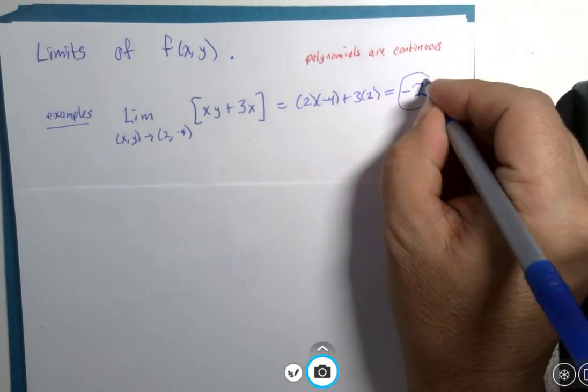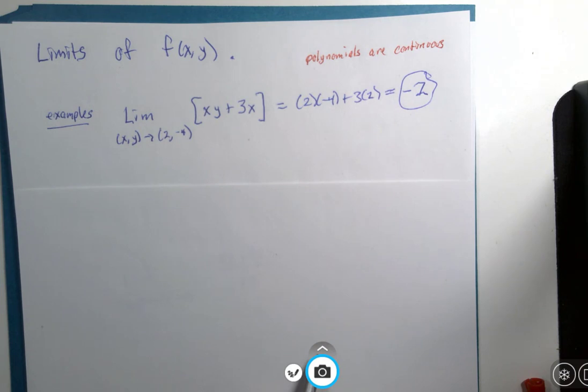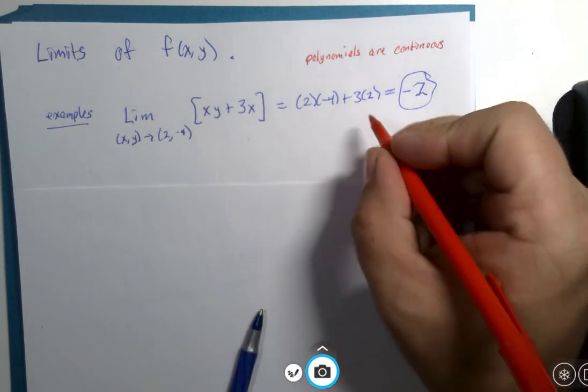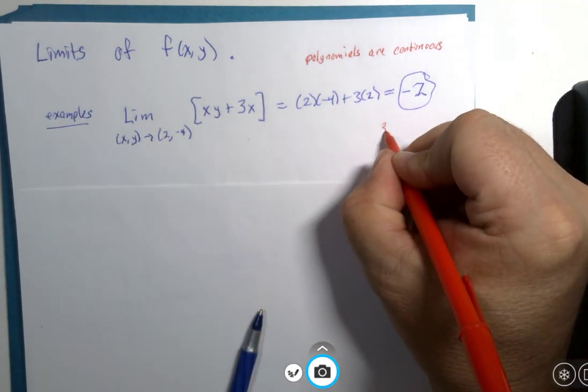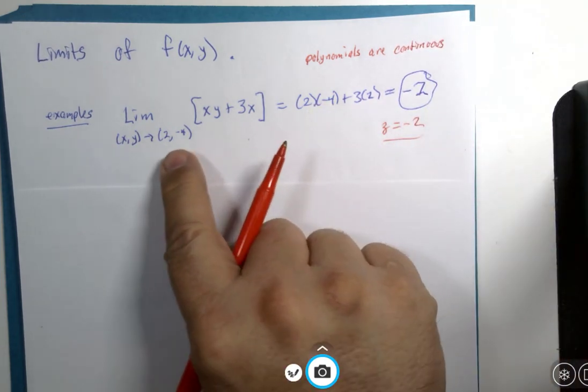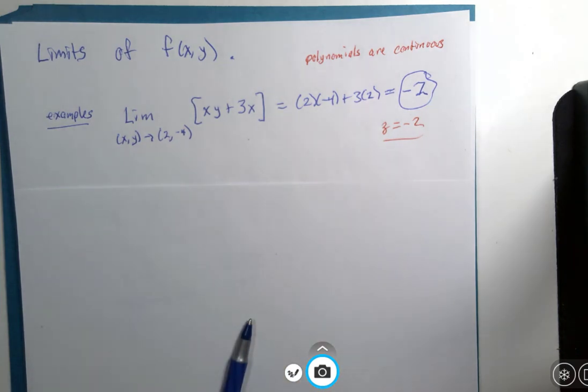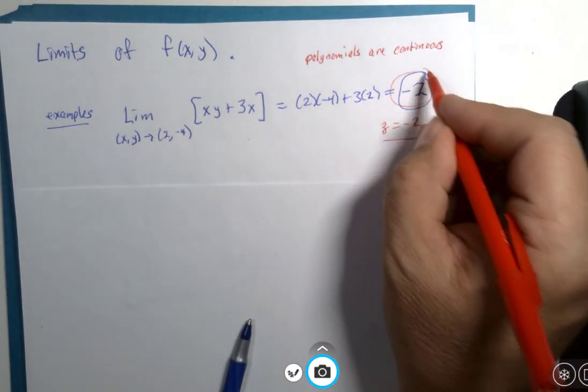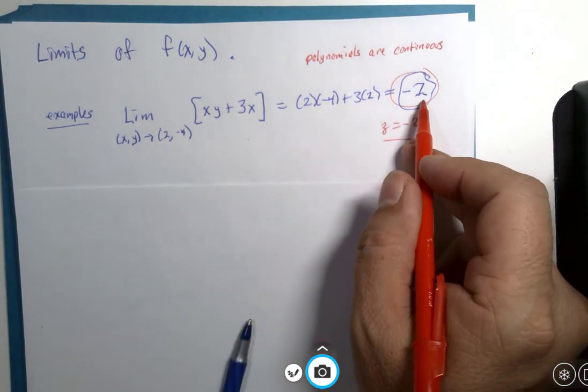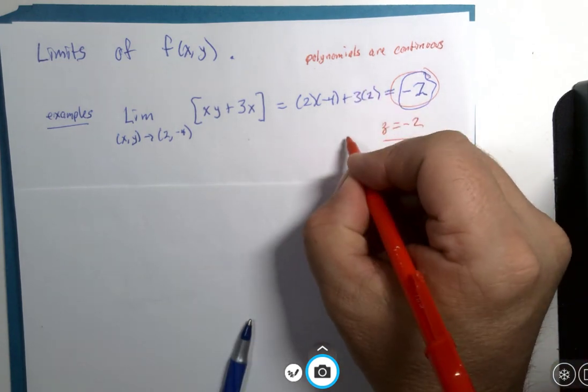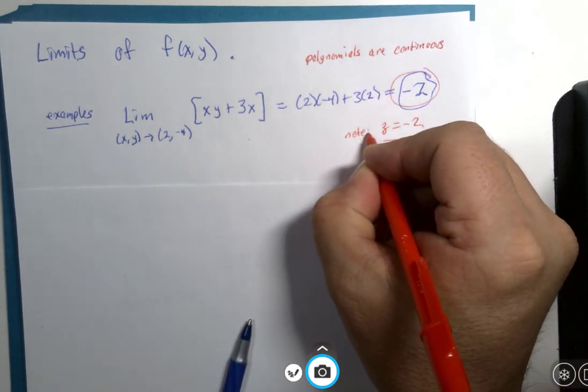And we would say, hey, that's the limit. That's the limit, which happens to be the z value at the point where x and y are 2 and negative 4. But this is the answer to the question. The limit is negative 2. This is just an observation about that limit.